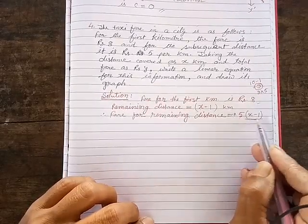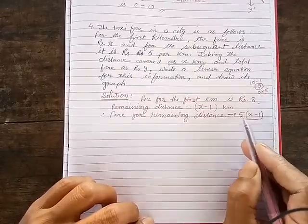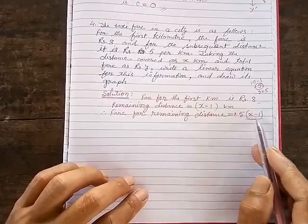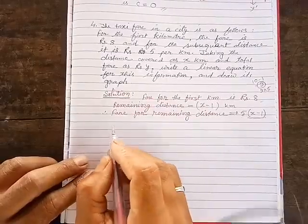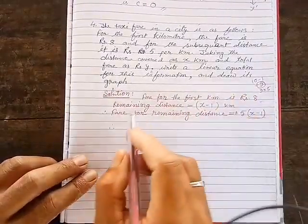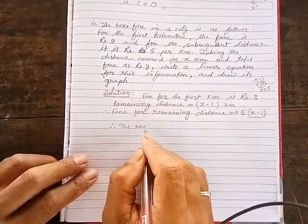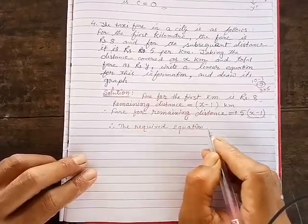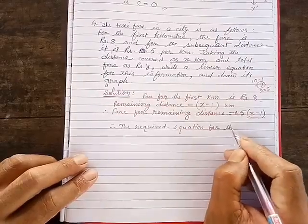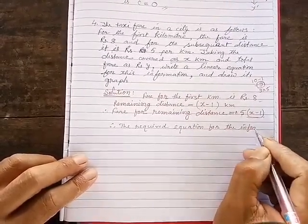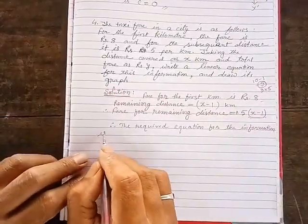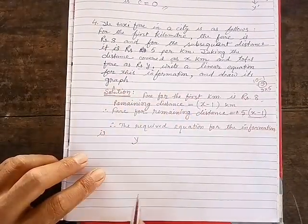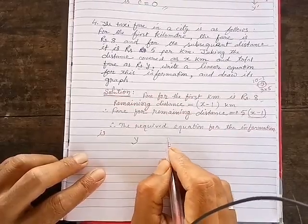Similarly, (x − 1) kilometers remain, so you pay 5 × (x − 1) for the remaining distance. Therefore, the required equation for this information: the total fare y equals the fare for the first kilometer (rupees 8) plus the fare for the remaining distance (5 × (x − 1)).